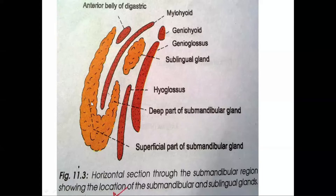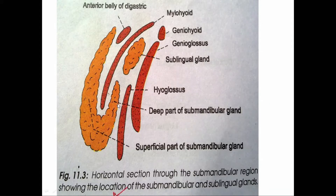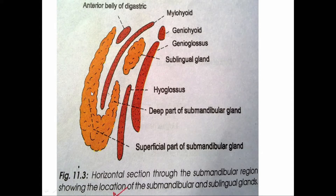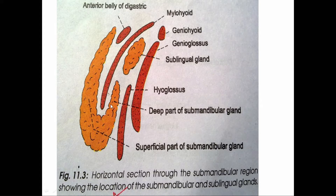The submandibular gland is divided into two parts by the posterior border of the mylohyoid muscle. One is the superficial part, which is the larger part, and the smaller one is the deep part. The superficial part presents three surfaces: the lateral surface, the medial surface facing the mylohyoid muscle, and the inferior surface directed towards the neck. It also has two ends: the anterior end and the posterior end.